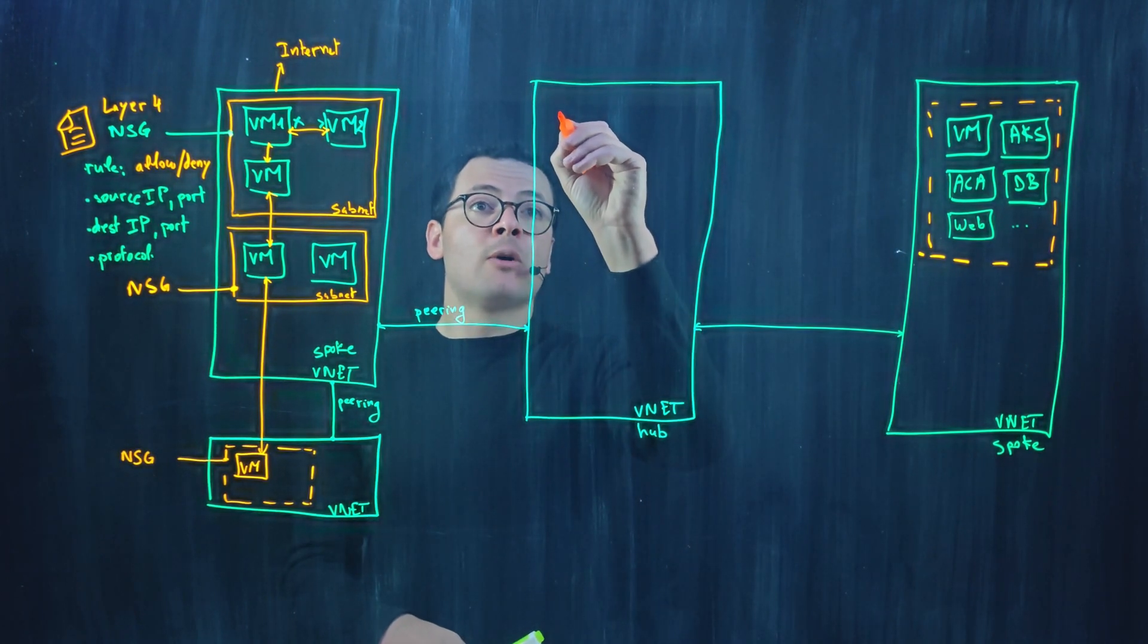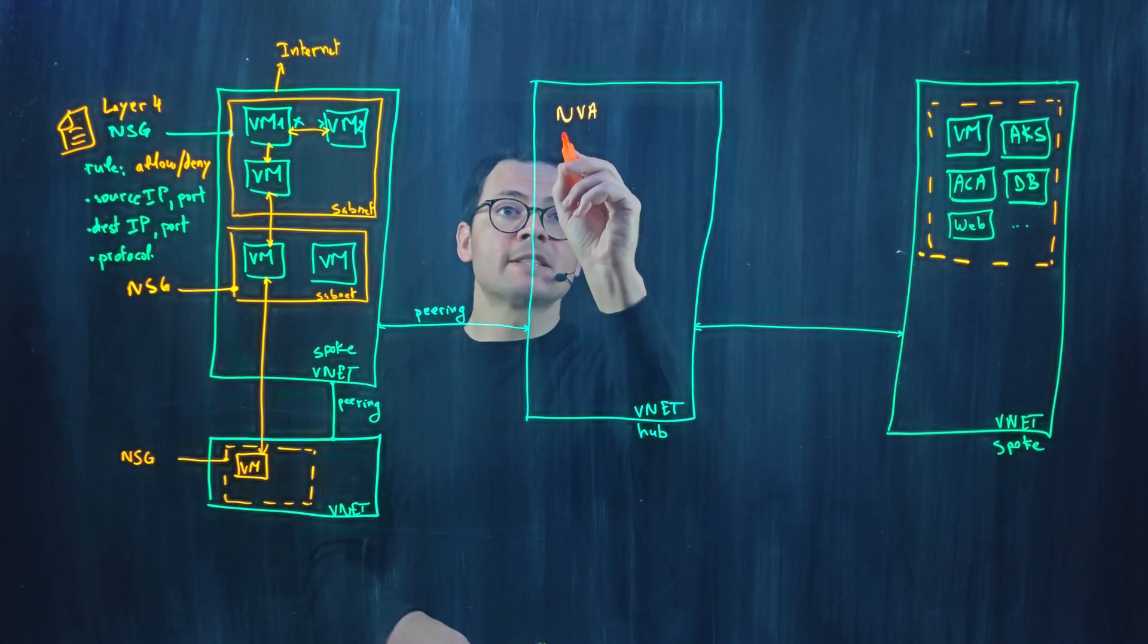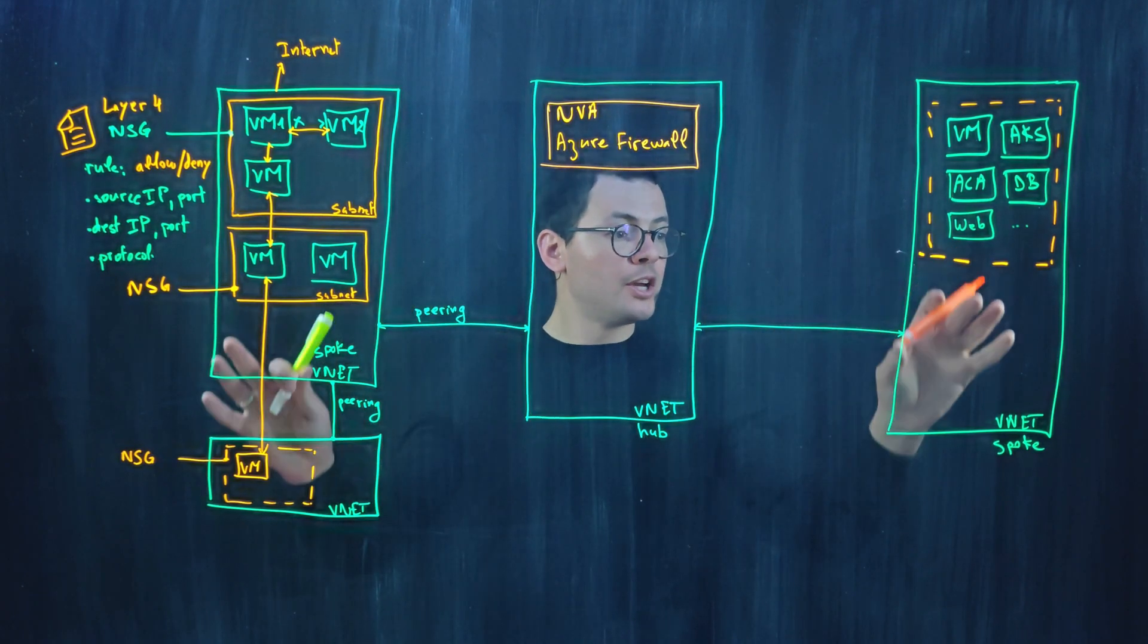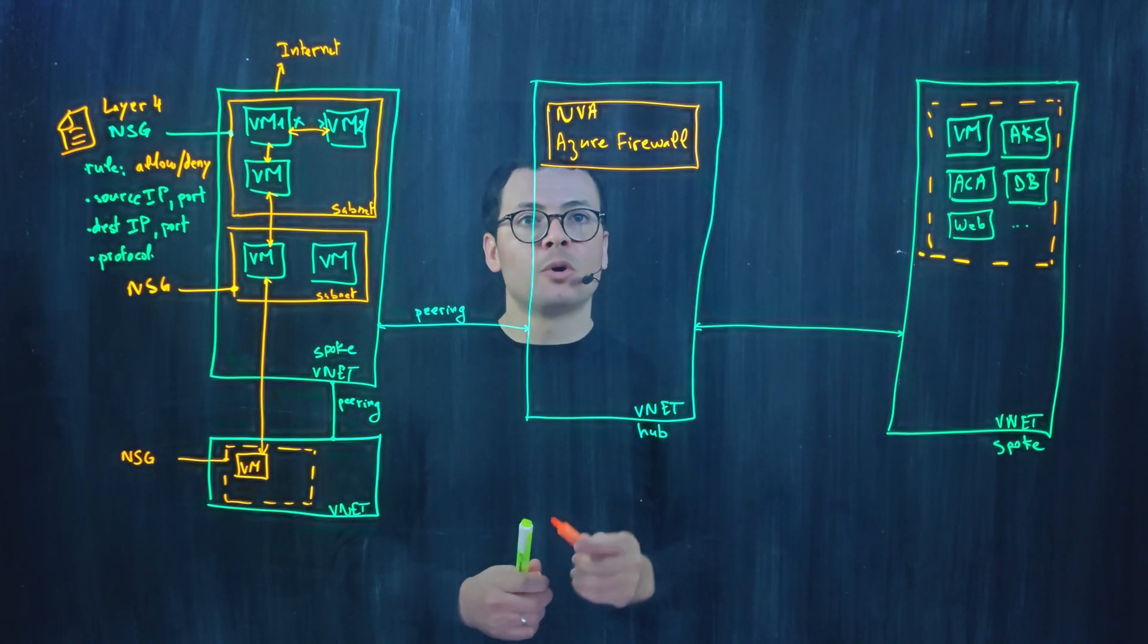So then the NVA, or our firewall—call it also NVA network virtual appliance—like Azure firewall would live within the hub network. So it would be shared for all the spokes that are attached or peered to the hub network.